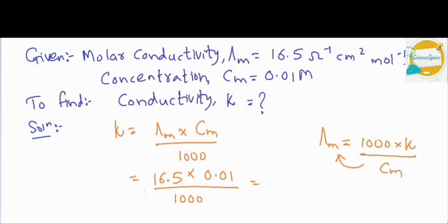When we solve this calculation, we will get the value of conductivity of solution. And the value is 1.65 times 10 to the power minus 4 ohm inverse cm inverse. This will be the final value of conductivity of the acetic acid solution.